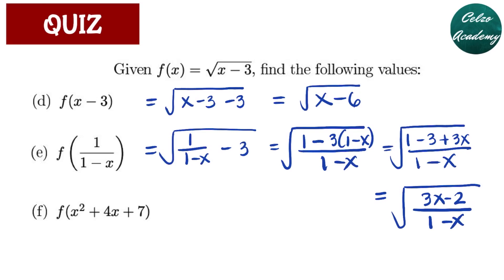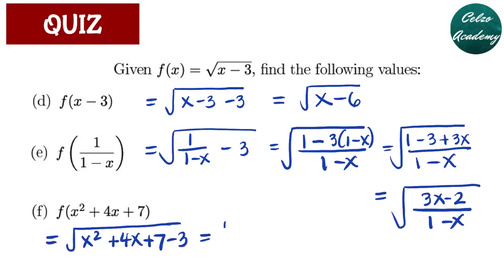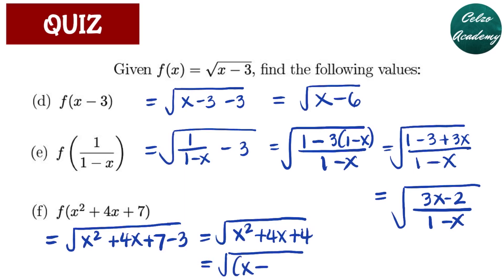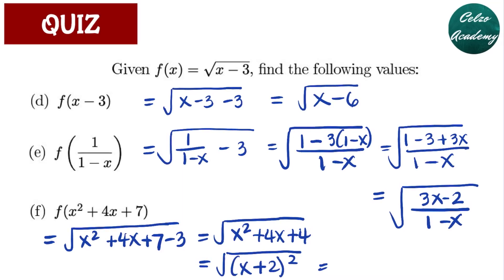For question letter F, f of x squared plus 4x plus 7 — we substitute x squared plus 4x plus 7 into the x, giving us the square root of x squared plus 4x plus 4. This is a perfect square trinomial, so we can factor it as (x plus 2) squared. The square root of a squared quantity is simply the quantity itself, but it should be the absolute value. So the answer is the absolute value of x plus 2.